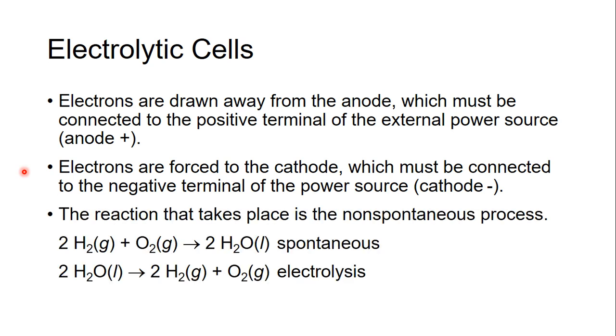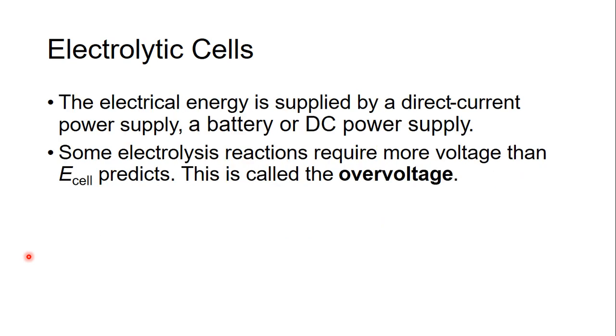The reactions in an electrolytic cell are just the reverse of a voltaic cell. In a voltaic cell we might have hydrogen plus oxygen goes to water. In electrolysis we have water being split to form hydrogen and oxygen. You need some kind of outside energy source for this because it's non-spontaneous. Sometimes the amount of energy we have to put in is more than what you would predict through theory and this is called overvoltage. It's the extra electricity you have to put in for a non-spontaneous reaction to happen.